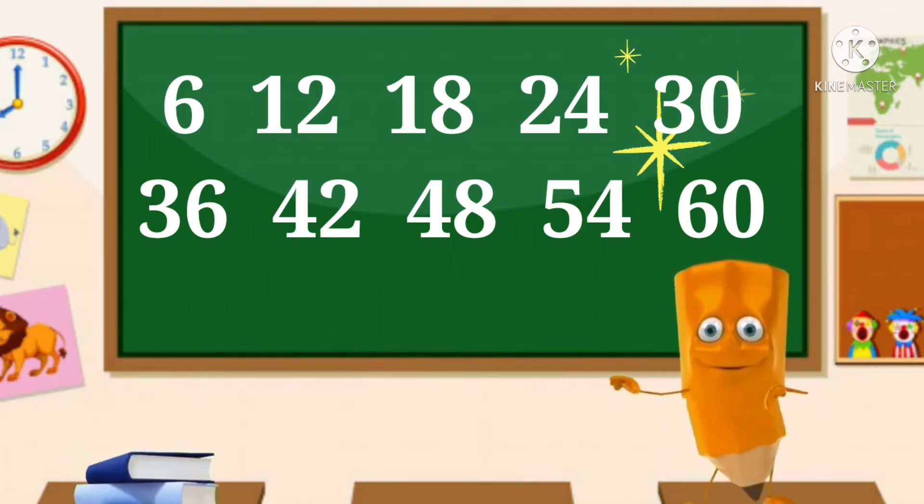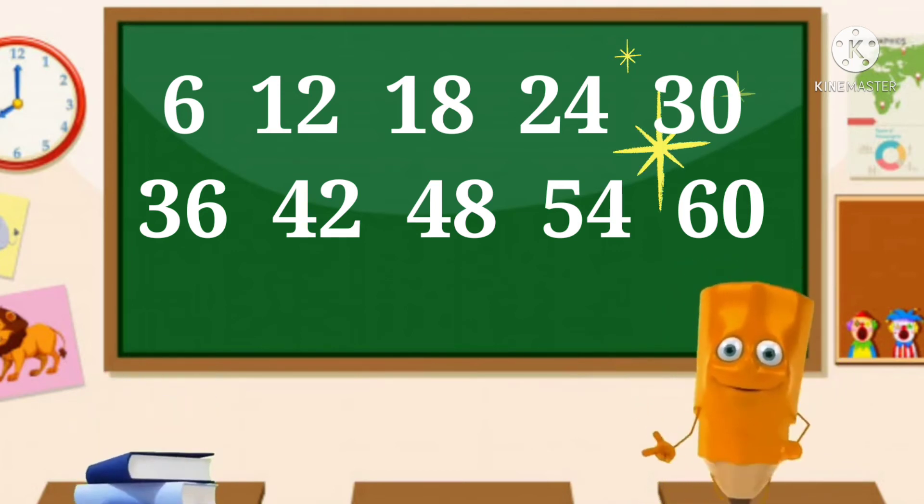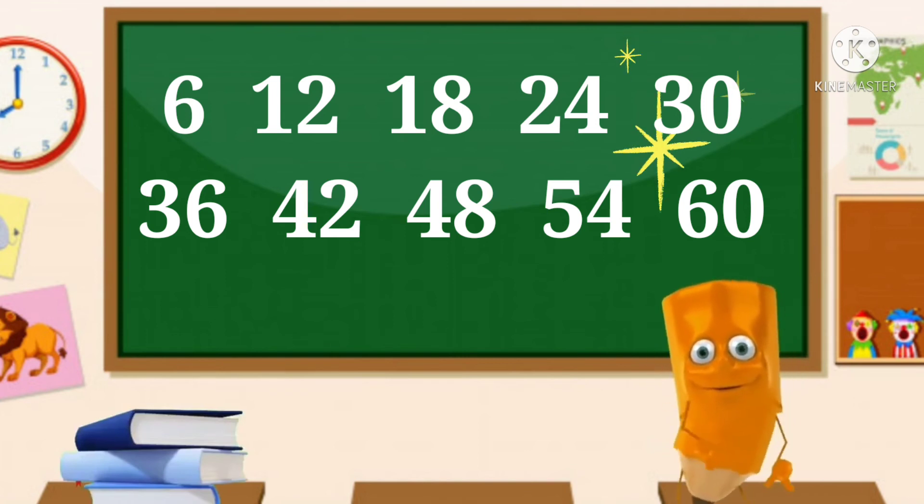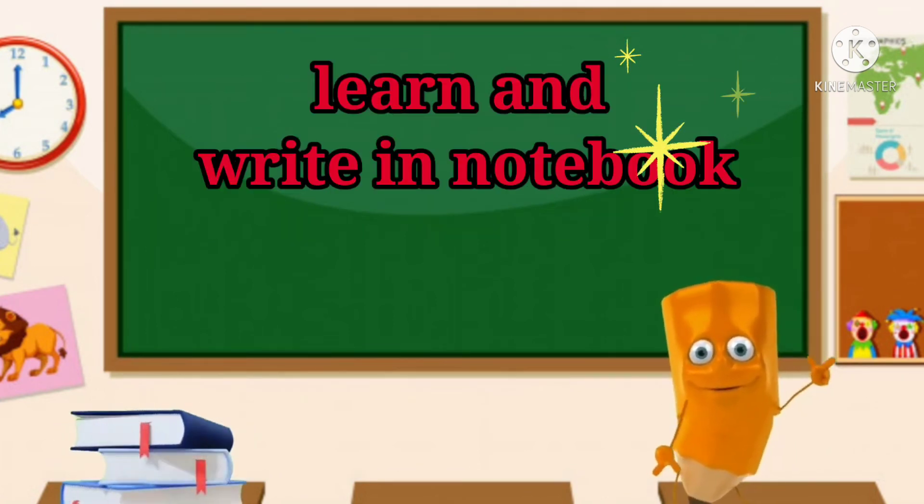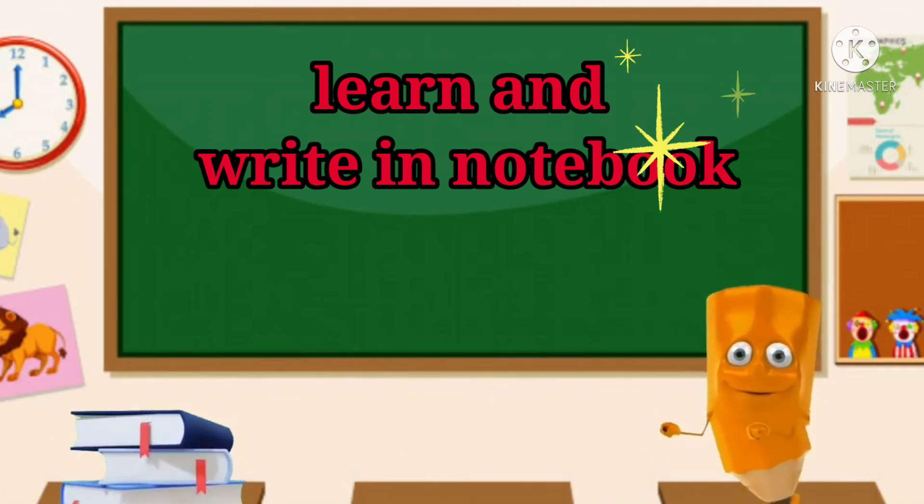6 sevens are 42, 6 eights are 48. 6 nines are 54, 6 tens are 60. Now all of you learn the table of 6 and also write down in your notebook.